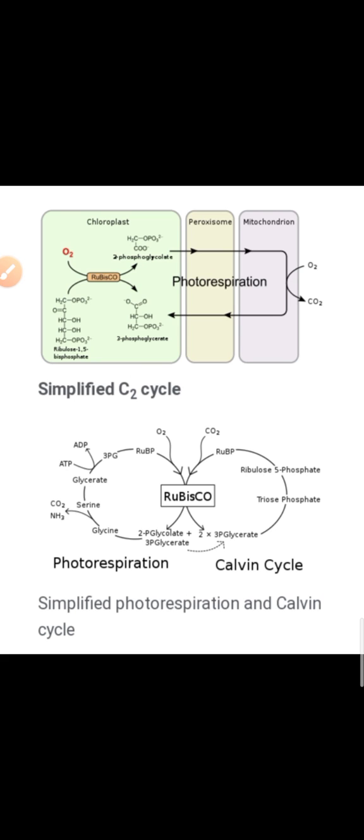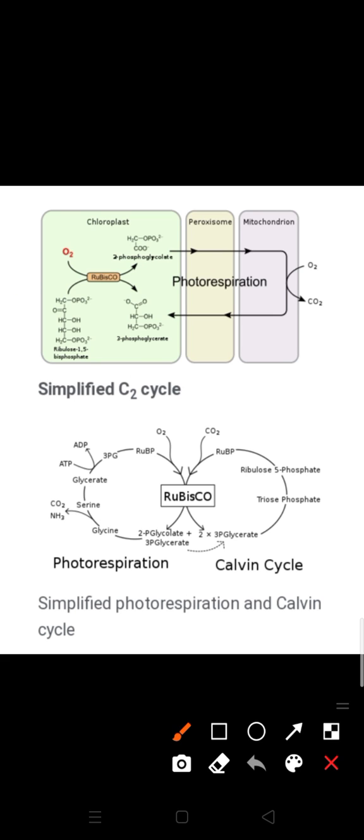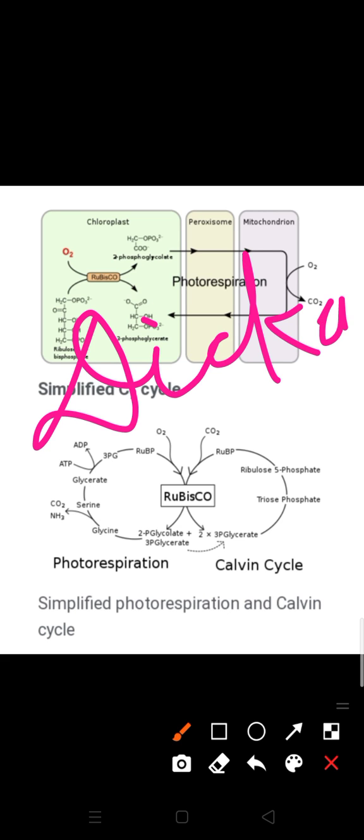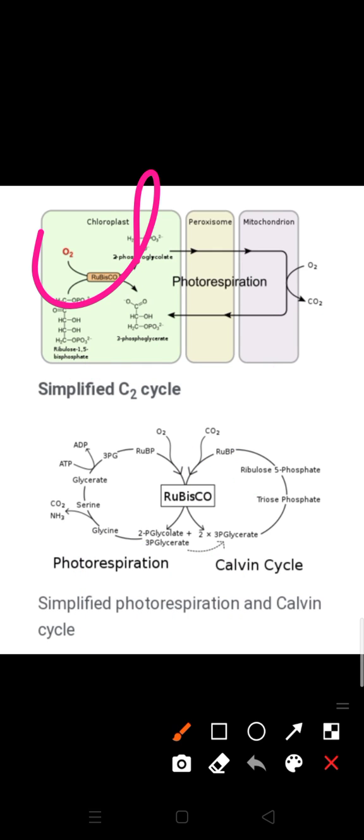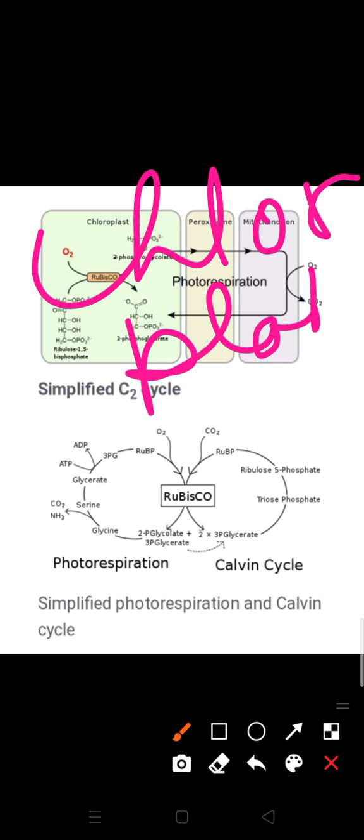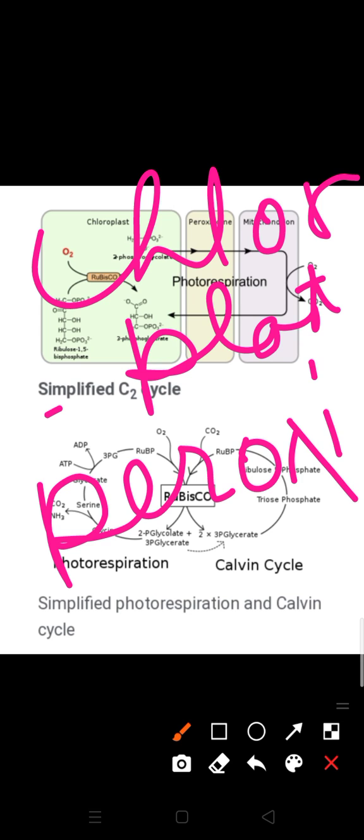Photorespiration was first discovered by two scientists — Decker and Teo — in tobacco plants. The process generally takes place in three parts of the plant cell: the chloroplast, then peroxisomes, and mitochondria. These three cell organelles are associated with the photorespiration process.